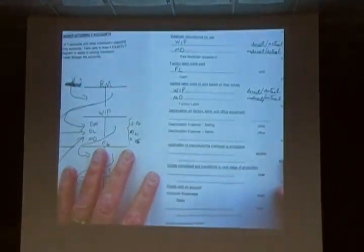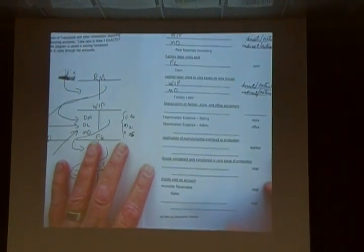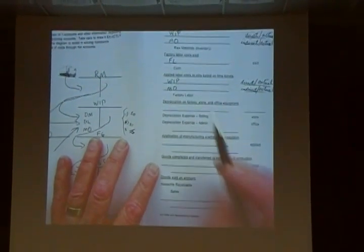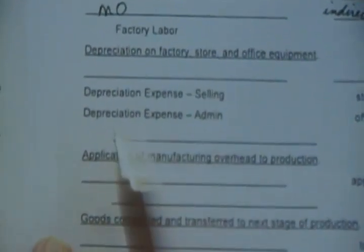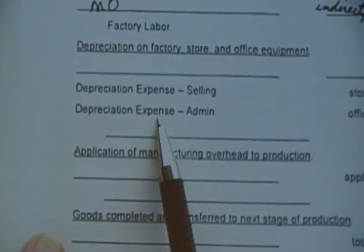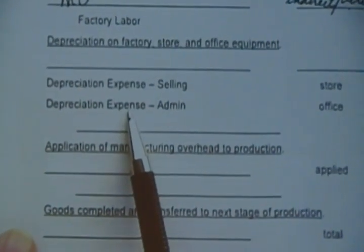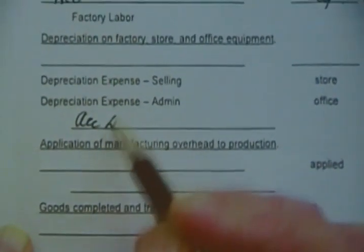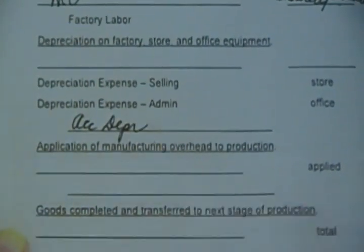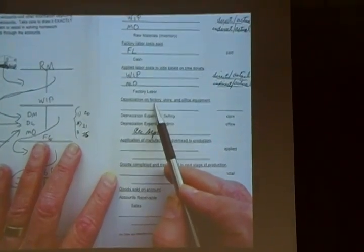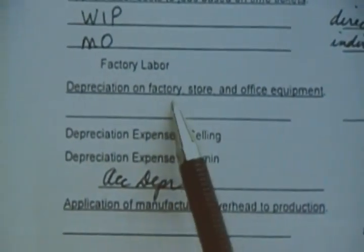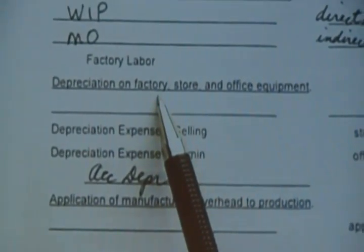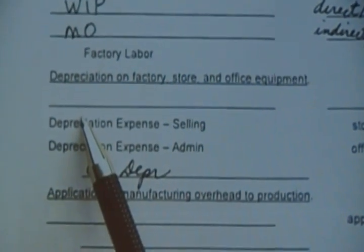Depreciation on factory, store, and office equipment. Part of it's a giveaway. For the store, we debited depreciation expense. For the office, we debited depreciation expense and credited accumulated depreciation. But that's not the whole entry. What about this factory one? Debit depreciation expense — factory equipment or building.